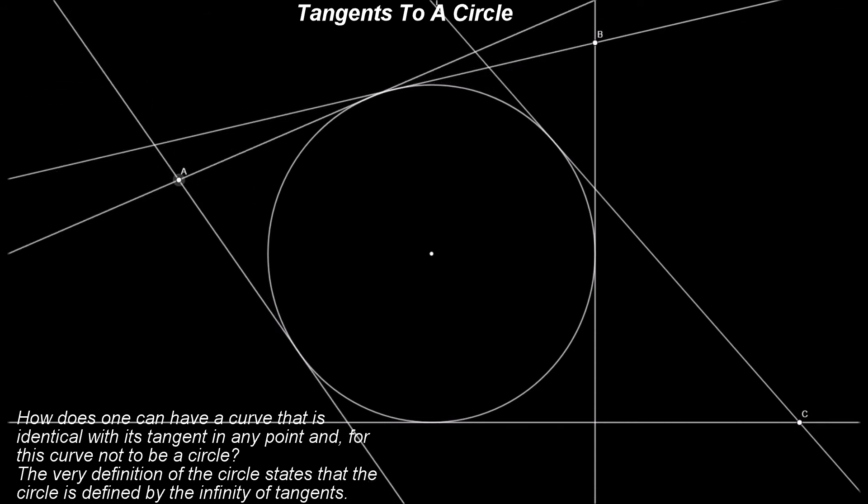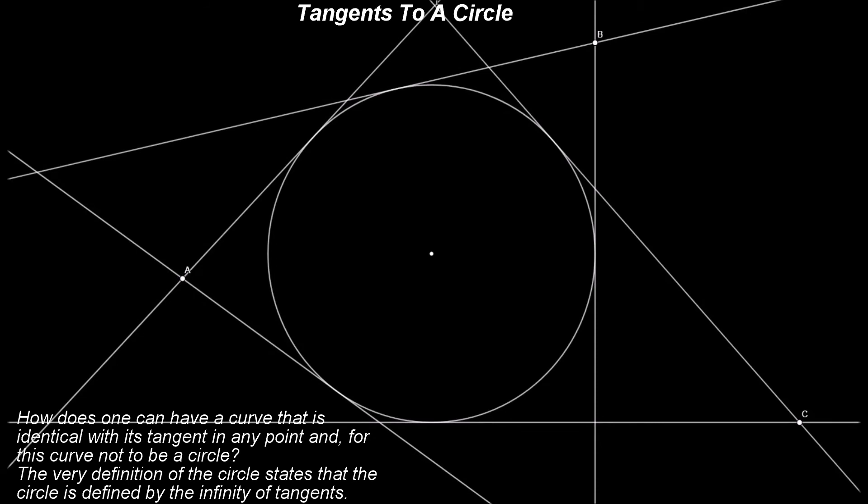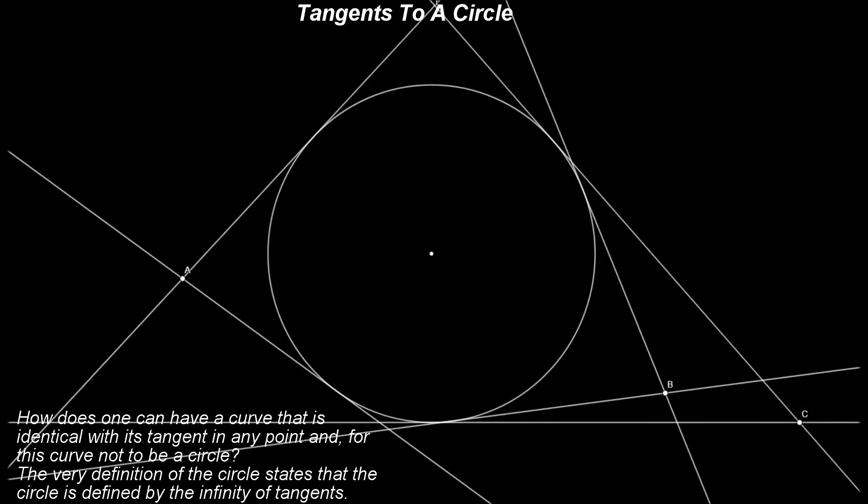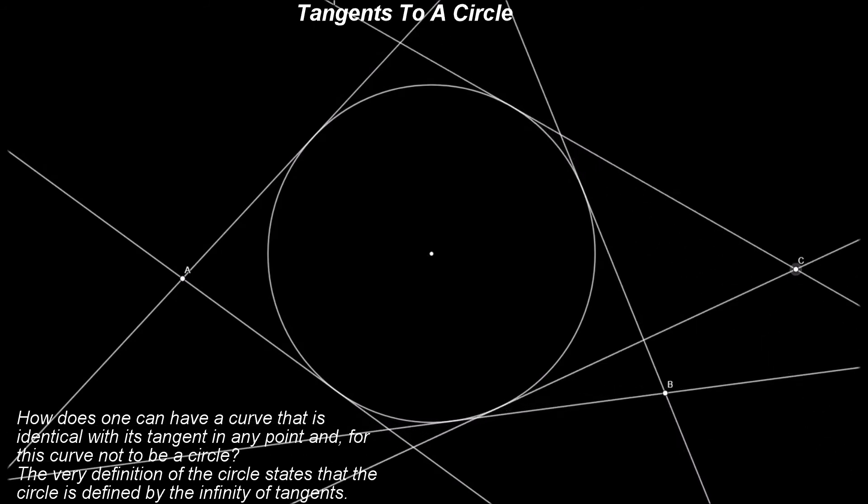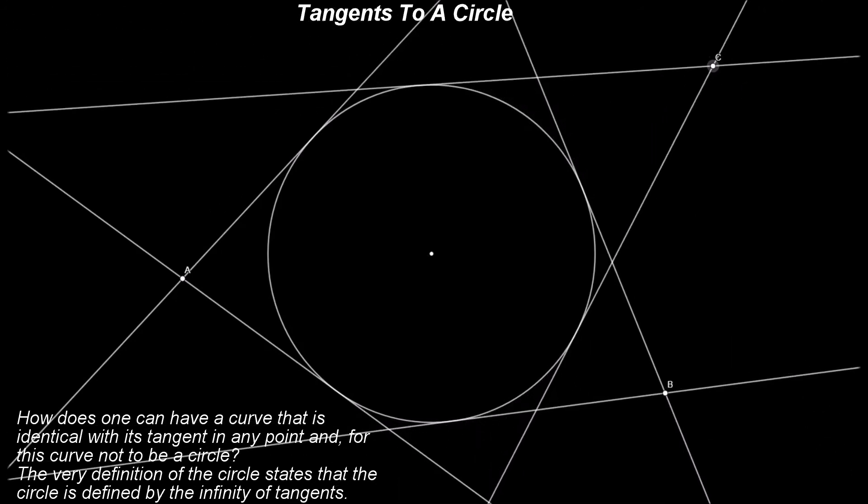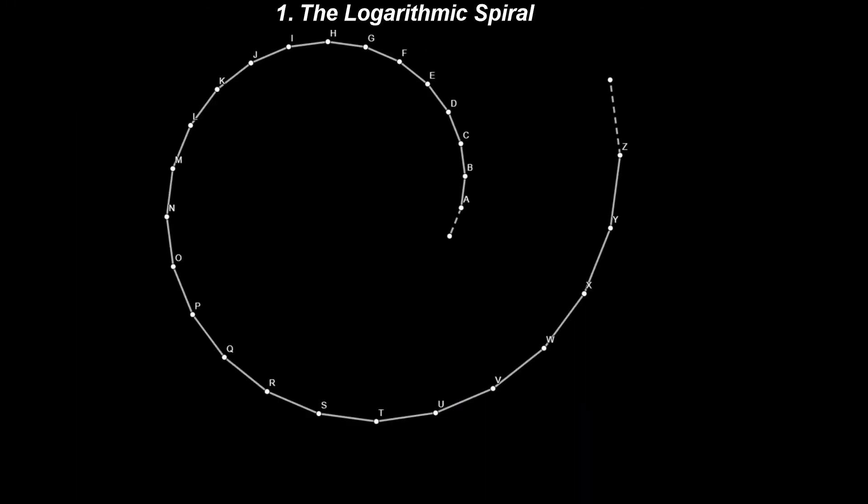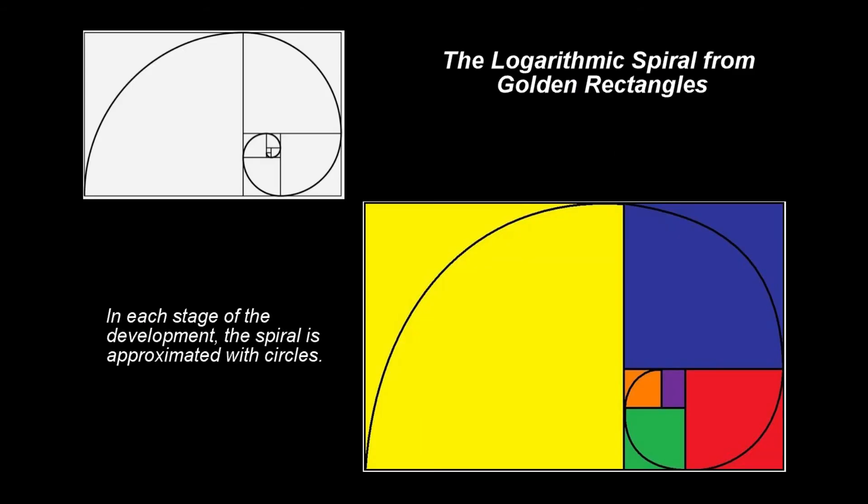And, as the number of sides of the initial polygon increases, point P tends towards the circle. How does then one can have a curve that is identical with its tangent in any point, and for this curve not to be a circle? The very definition of the circle states that the circle is defined by the infinity of tangents.